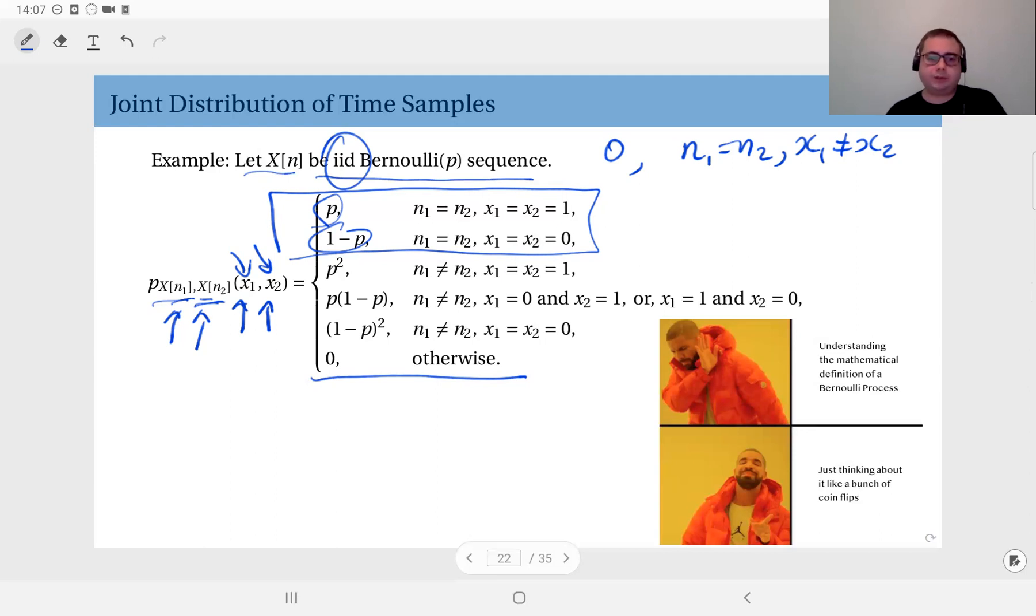What if n1 and n2 are different? Now you have two different Bernoulli random variables. We know that they are IID. What does that mean? First of all, they are independent, and secondly, they have the same parameter. They are identically distributed. Since they are independent, their joint PMF will be in the product form. So if x1 and x2 are both 1, the probability is P squared. If they are both 0, the probability is 1 minus P squared. And if they are 0, 1 or 1, 0, then the probability is P times 1 minus P.